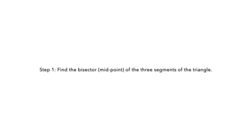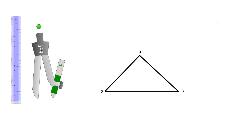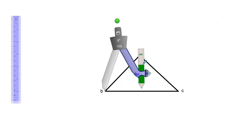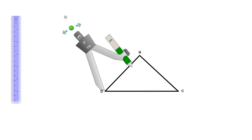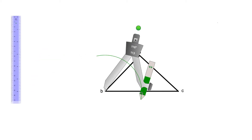The first thing we're going to do is find the bisector, or midpoint, of the three segments of the triangle. Let's try to keep it organized. I'm going to start with segment AB. I'm going to place the needle at one of the points of this segment, open my compass more than half of the length of that segment, and trace an arc.